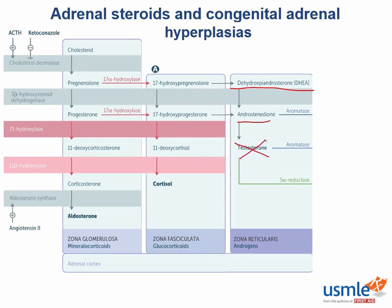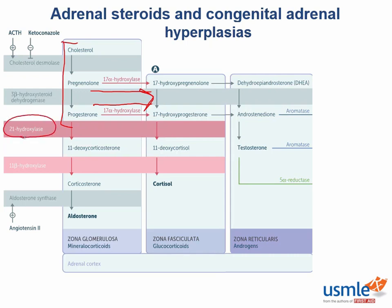The main steroids synthesized in the zona reticularis are DHEA and androstenedione. Testosterone, which is a much more potent androgen, is really in the minority. Here's the bare minimum of what you need to know. One: cholesterol is converted from pregnenolone to progesterone, and both pregnenolone and progesterone need to be 17-alpha-hydroxylated in order to enter the cortisol pathway. Two: to get closer to the end products aldosterone and cortisol, the first two enzymes are the same — the first is 21-hydroxylase, and the second is 11-beta-hydroxylase. The alpha and beta aren't really so important, but the numbers very much are.